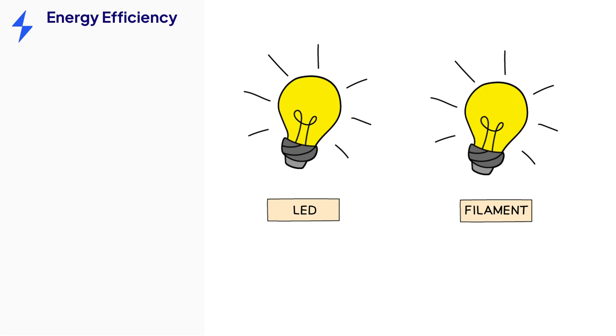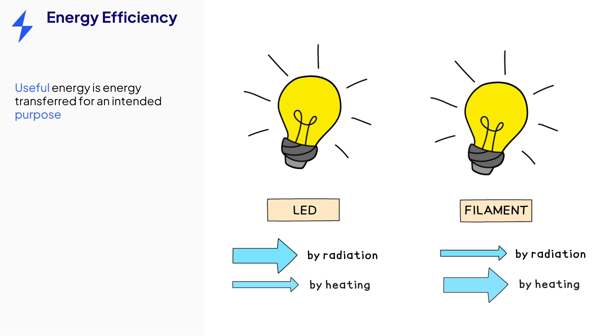We know that energy is transferred electrically from the main supply to the light bulb. That energy is then transferred away from the light bulb by radiation and by heating to the surroundings. The transfer by radiation or visible light is the useful energy transfer. The purpose of a light bulb is to provide light but energy is transferred unusefully by heating to the thermal store of the surroundings.